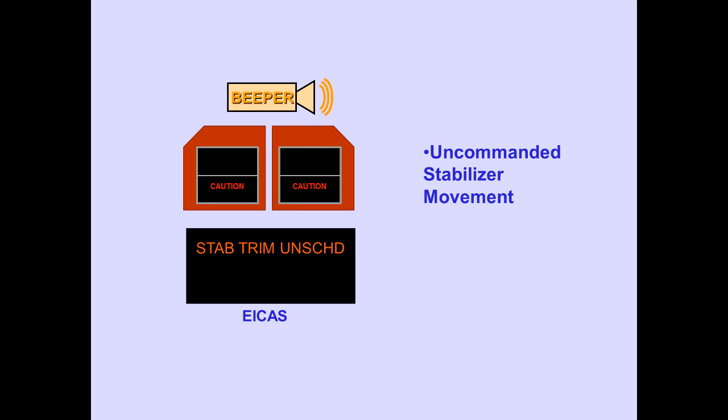The ICAS caution message 'stabilizer trim unscheduled' is displayed when uncommanded stabilizer movement is detected; automatic cutout does not occur. The ICAS advisory message 'stabilizer trim' is displayed when the respective stabilizer motor is inoperative when commanded to run, or when automatic stabilizer cutout has occurred, or when a stabilizer trim cutout switch is in the cutout position.